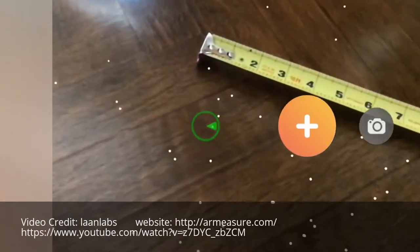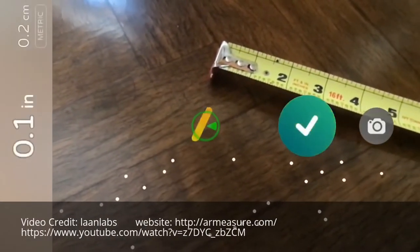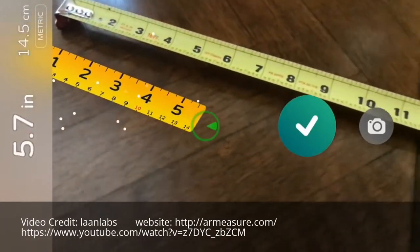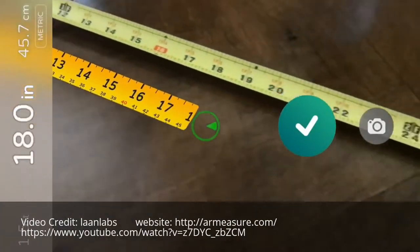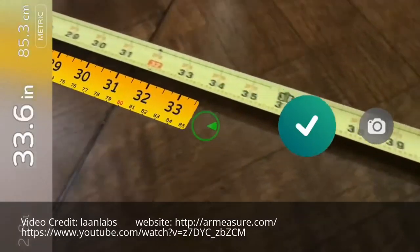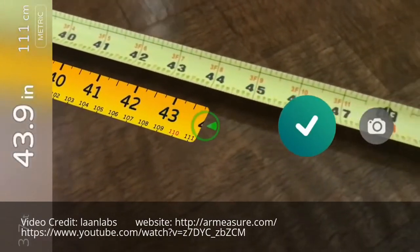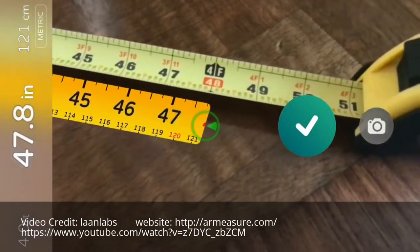All it takes to use your smartphone as a virtual ruler is to point your camera, select your desired starting point and pull your phone away from it. AR Measure will then calculate the distance between your starting and end points, sort of like a virtual measuring tape.